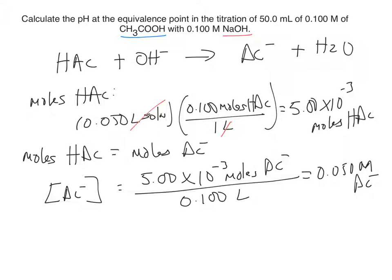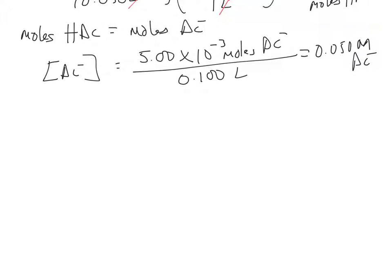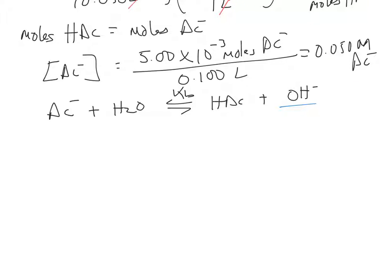Now we write the equation for acetate reacting with water. Acetate in water produces acetic acid plus OH⁻ at equilibrium. This equilibrium has a dissociation constant called Kb, because we have a base. So Kb equals the concentration of acetic acid times the concentration of OH⁻, divided by (0.05 − x). This is the same ICE table expression we have seen before.